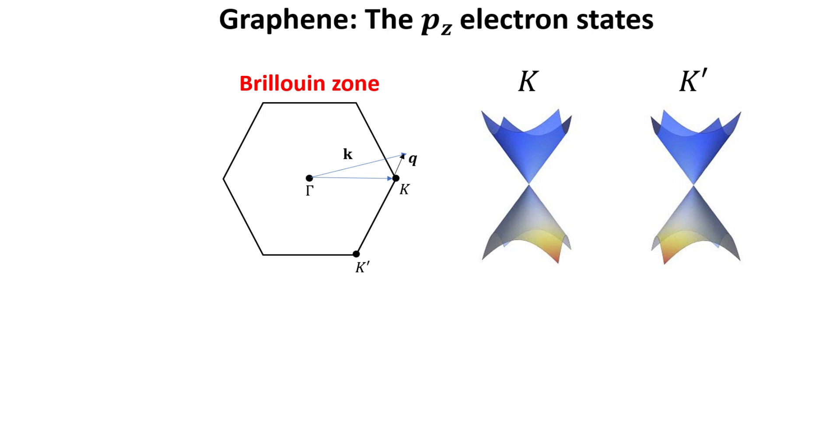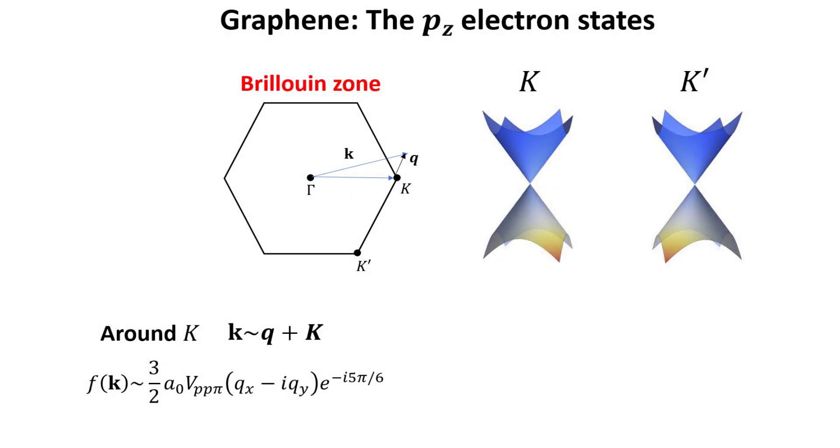The idea is to express an arbitrary momentum k in terms of q and let q be a small quantity. This guarantees a description of states at the vicinity of the K point. In letting q be a small quantity, we can expand the structure factor appearing in the Hamiltonian in small powers of q. For graphene we only keep the first order terms in q in the expansion.